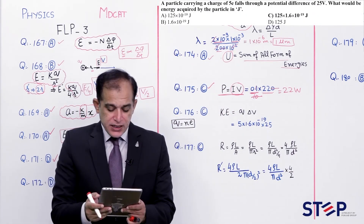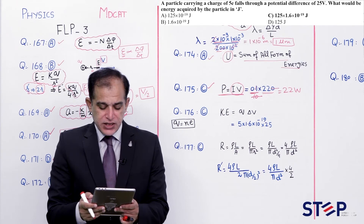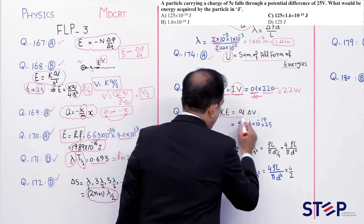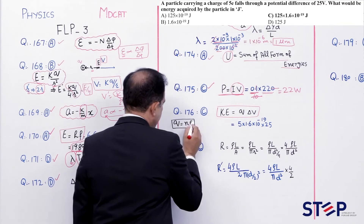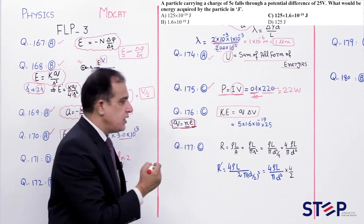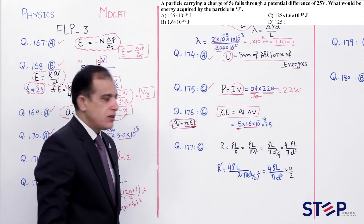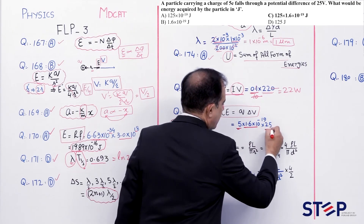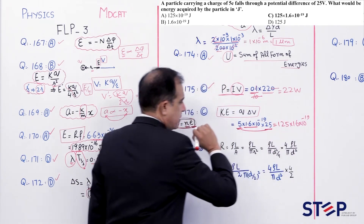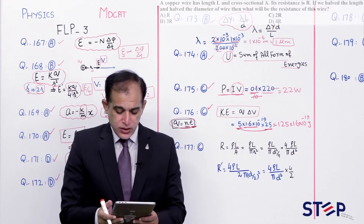Question number 176: A particle with charge of 5 electrons falls through potential difference of 25V. Energy = qV = 5 × 1.6×10⁻¹⁹ × 25 = 5 × 25 × 1.6×10⁻¹⁹ = 125 × 1.6×10⁻¹⁹ J. Correct option: Charlie.